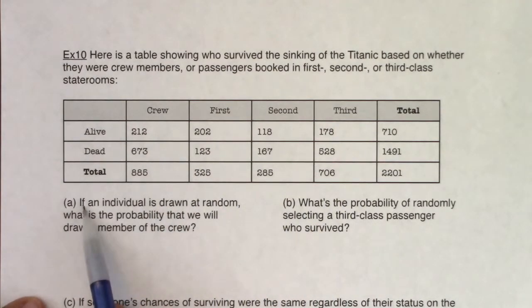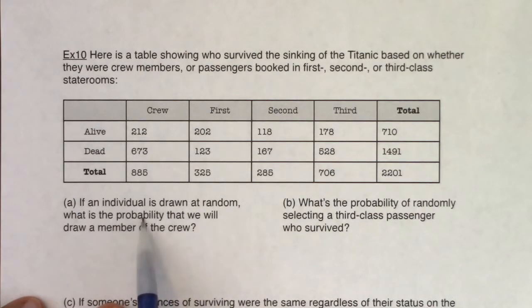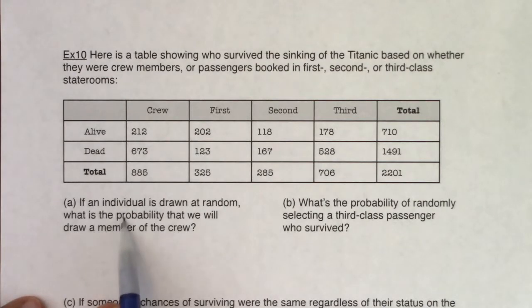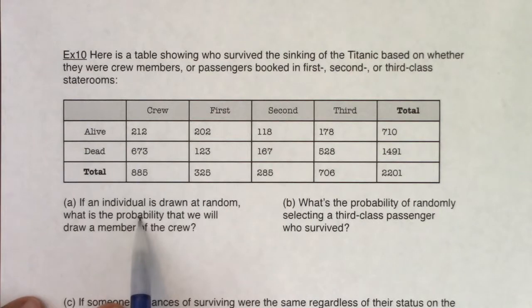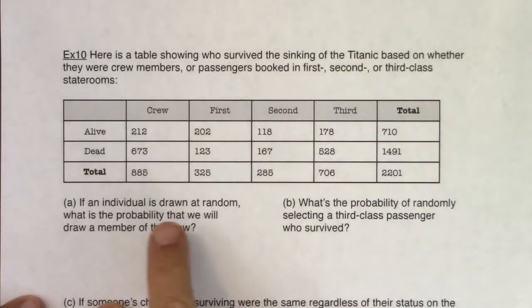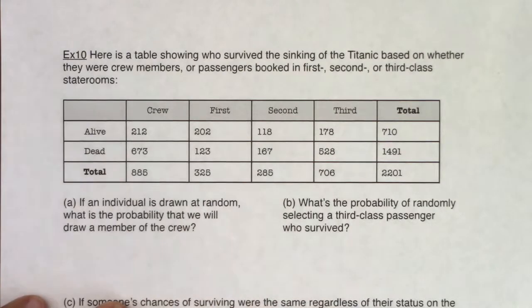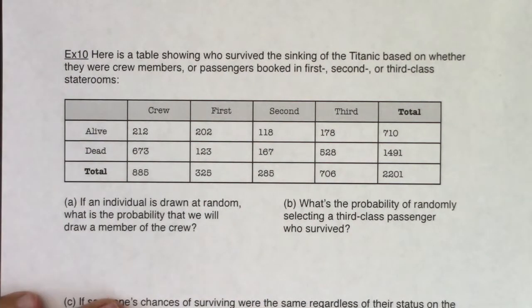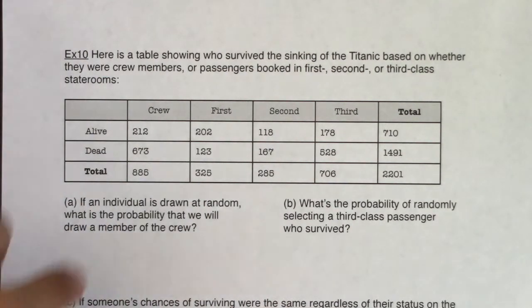So let's read this. It says if an individual is drawn at random, what is the probability that we will draw a crew member? This question doesn't have anything to do with chapter 11 — this is a chapter three question. Parts A and B are chapter three review questions, so I would suggest you pause for a bit and see if you can answer A and B on your own.